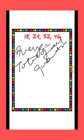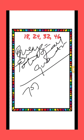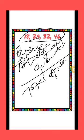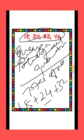Sum of all quantities divided by total number of quantities. So first of all, we will calculate the sum of all the quantities, which is 18 plus 24 plus 32 plus 46, divided by...